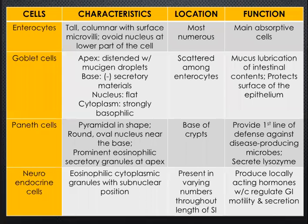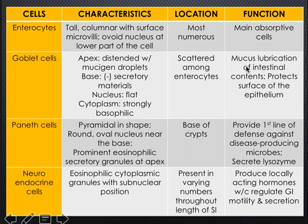Here is a summary table of the cells of the small intestine. Enterocytes are the most numerous — the main absorptive cells and the parenchyma of the small intestine. Goblet cells are scattered among enterocytes for mucous lubrication, protecting the surface epithelium. Paneth cells, with prominent eosinophilic secretory granules at the apex, are found at the base of the crypts and provide the first line of defense against disease-producing microbes, secreting lysozyme.